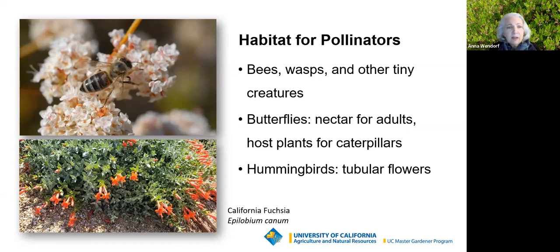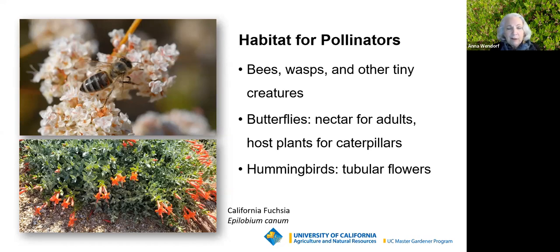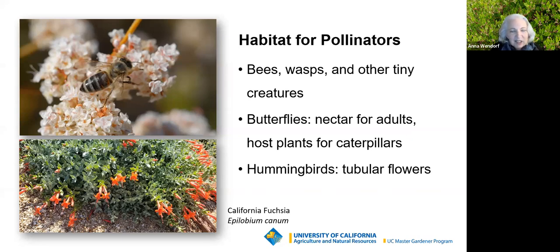Milkweed is the only plant that monarch butterflies will lay their eggs on, and many of us have been planting milkweeds to support monarch populations. Other butterflies and moths also have very specific host plants — we have to support them as well. Hummingbirds are also considered pollinators, and we can provide them with tubular flowers. This is a California fuchsia — a really beautiful hybrid form. You don't want to plant non-hybrid California fuchsias because they tend to spread, but this one is particularly beautiful.